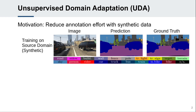Semantic segmentation is the task of classifying each pixel of an image. Training a neural network for this task usually requires expensive pixel-wise annotations of real-world images. Therefore, it would be desirable to exploit other domains that are easier to annotate, such as synthetic data.